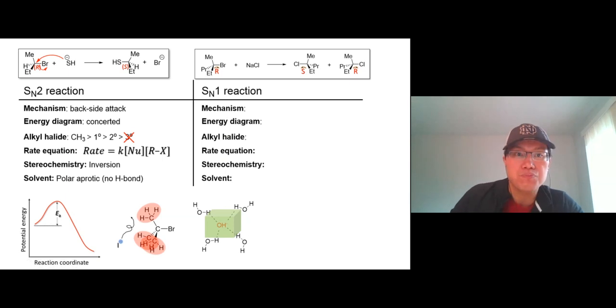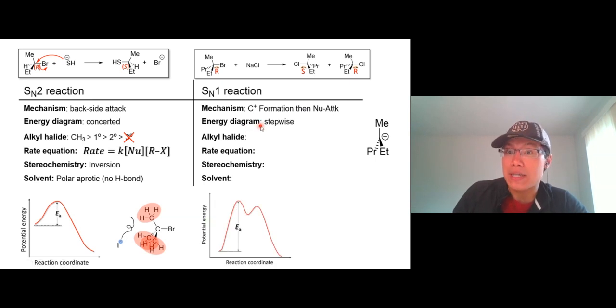Now move on to SN1. The mechanism: there are two-step reactions - carbocation formation and then followed by nucleophilic attack. The energy diagram will see two humps because we call it stepwise reaction. The first step is carbocation formation, you get intermediate, and then the carbocation undergoes nucleophilic attack with the nucleophile to form the product.